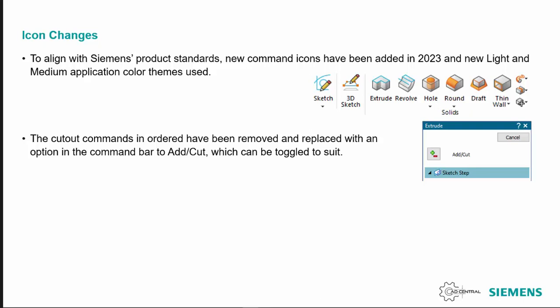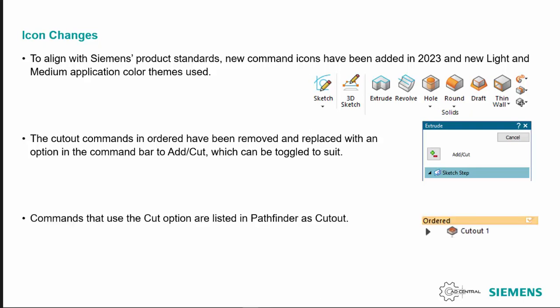The cutout commands have been removed. Now, in the ordered environment, you need to go into extrude or revolve and you'll see in the command bar an add or cut option. If you switch it to the cut option, in the pathfinder it will still display as cut out as opposed to protrusion.